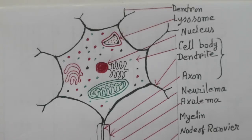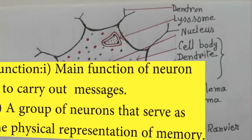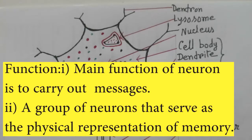The function of neurons is to process and transmit information. In vertebrate animals, sensory neurons handle input and motor neurons handle output signals. The main function of neurons is to carry messages or signals as impulses to other neurons as well as to other cells, which in turn allows effector organs to respond to appropriate stimuli.